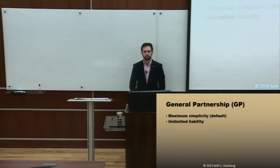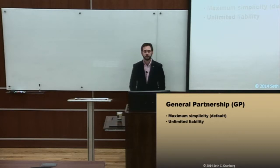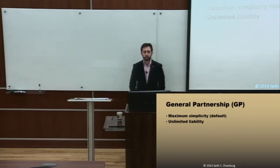If you end up in a general partnership structure, each partner has unlimited liability for the debts and torts of the company. Meaning that if either of the partners in the course of doing company business injures somebody, either of the partners can be liable to have their house taken or their assets seized in order to pay for that tort injury by the other partner. So entering into a general partnership by accident can result in liability that you may not want to experience.